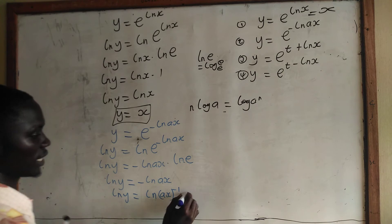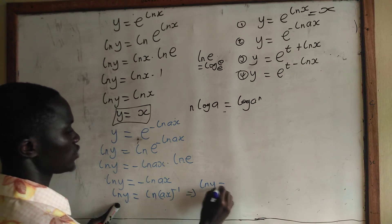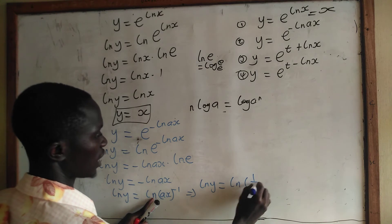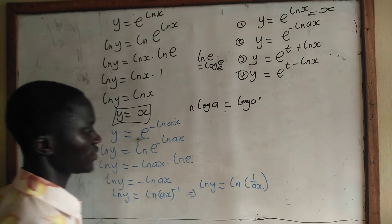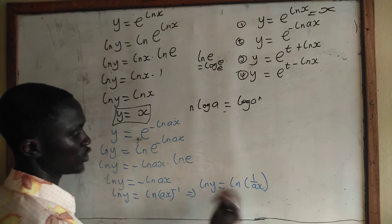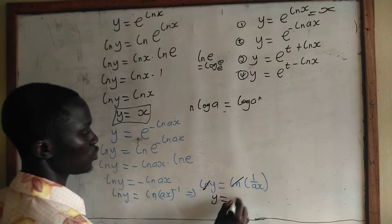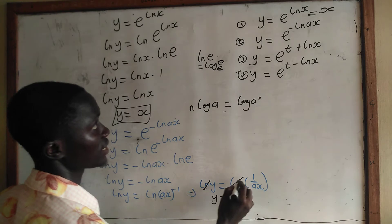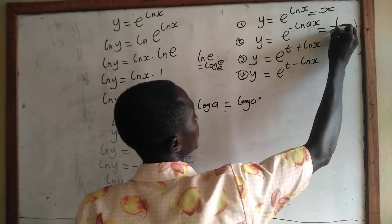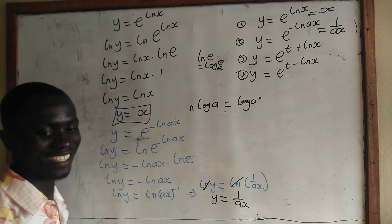From the logarithm law, this implies ln y equal to ln of ax to the power negative 1, which means ln y equal to ln of 1 over ax. So if we take anti-ln of both sides, the ln cancels, and we have y equal to 1 over ax. So the whole expression e to the power negative ln ax is equal to 1 over ax.